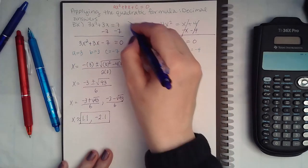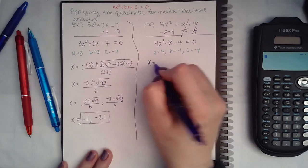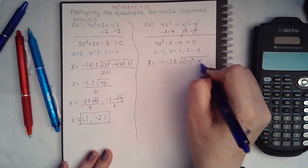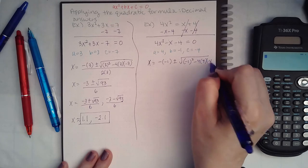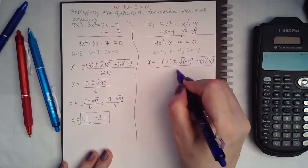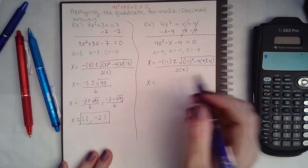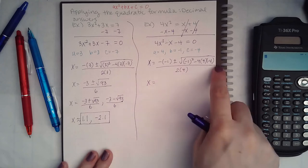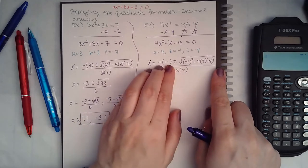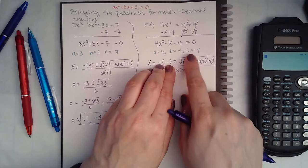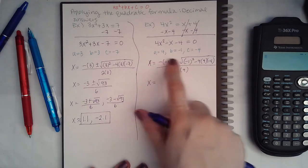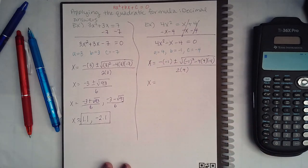So let's plug it into the formula. Do make sure when you're using the formula that that bar is underneath everything in the top. You don't want to cut your bar short and then it looks like just the square root is over the denominator. The whole entire thing is over the 2a.